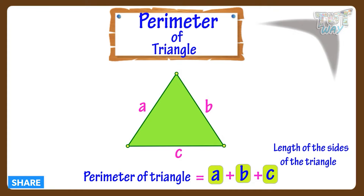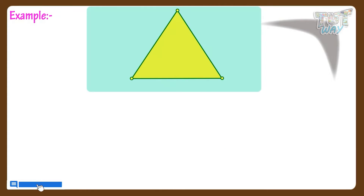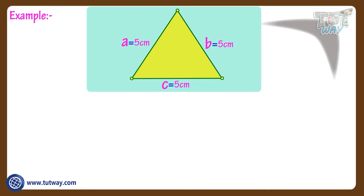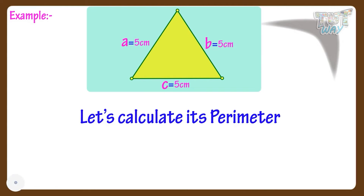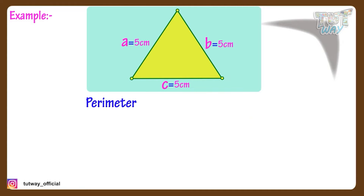Let's take an example. Here we have a triangle with the lengths of its sides mentioned. Now let's calculate its perimeter. We know perimeter is equal to A plus B plus C.